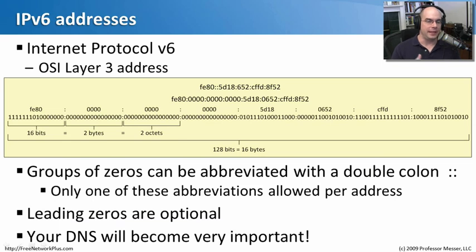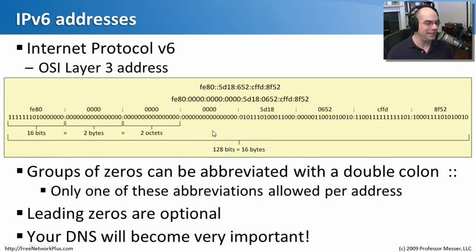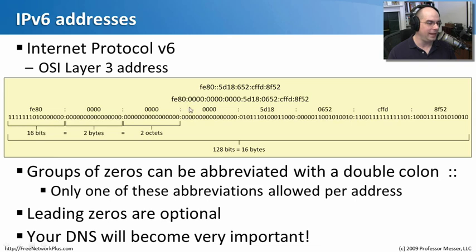The latest generation of IP addressing is IPv6 — Internet Protocol version 6 — also a layer 3 address. Our industry is slowly moving from IPv4 to IPv6, primarily because IPv6 supports vastly more addresses. Instead of a 32-bit address, you now have a 128-bit address that is 16 bytes long. We represent this in 16-bit chunks using hexadecimal groupings — so 'fe80:0000:0000' and so on — separated by colons rather than dots.